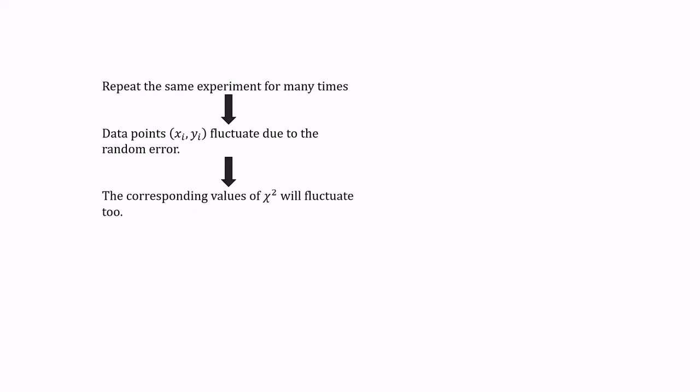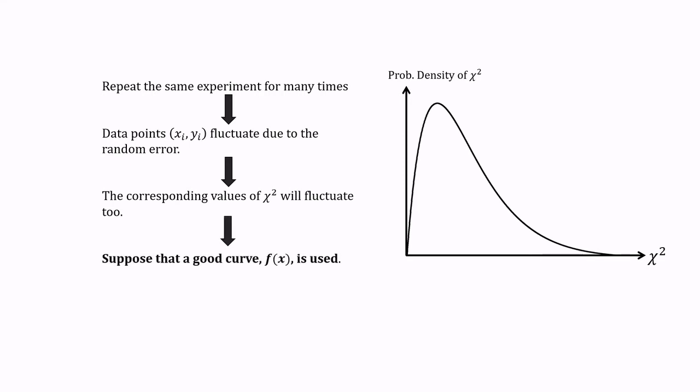These chi squared values are distributed according to the chi squared distribution. Suppose that a good curve model, f(x), is used to approximate the data points.